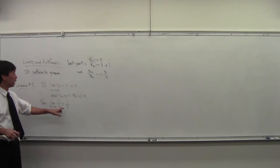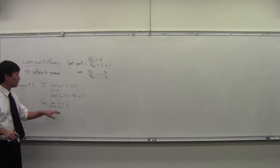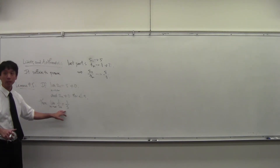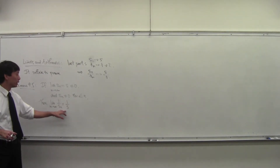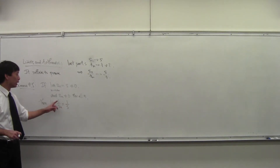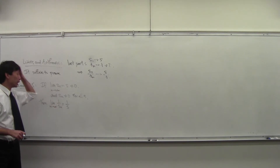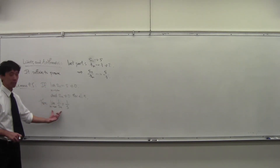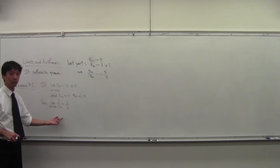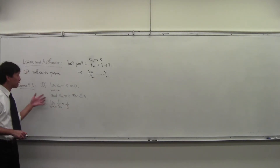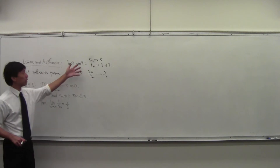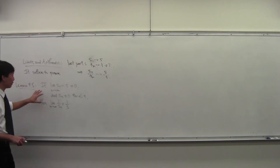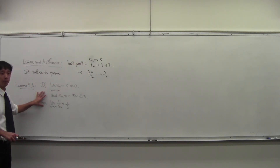Because if we get this, then we can just use the multiplication part of the limits and arithmetic theorem and say: if I know this is true, and I know that t_n goes to t, then I take this product and I get t over s. So I don't have to prove this full-blown statement — I just have to prove this lemma, and that will be enough.